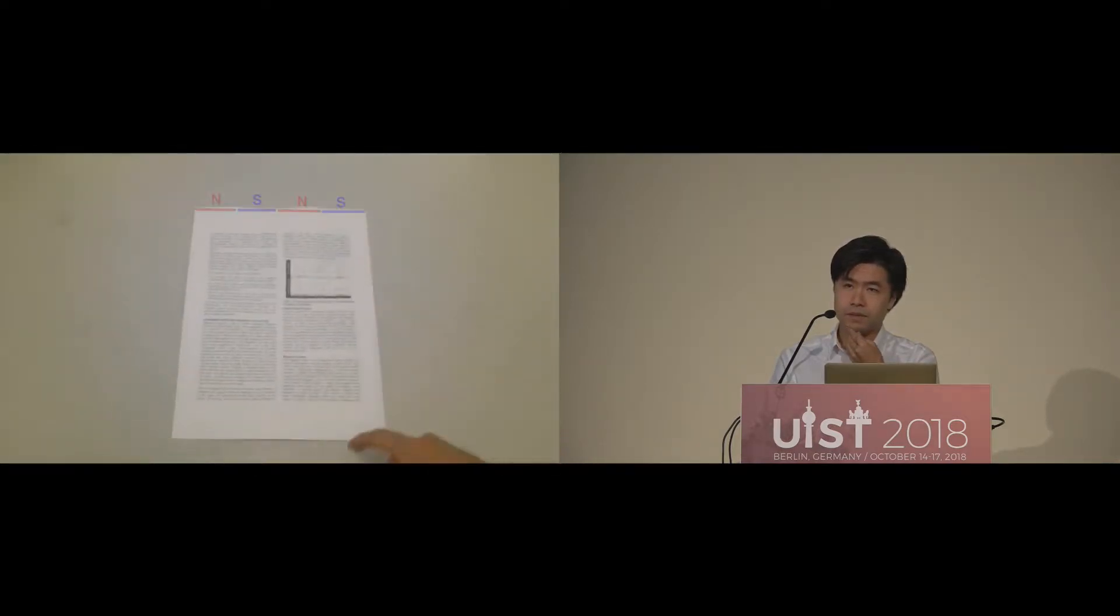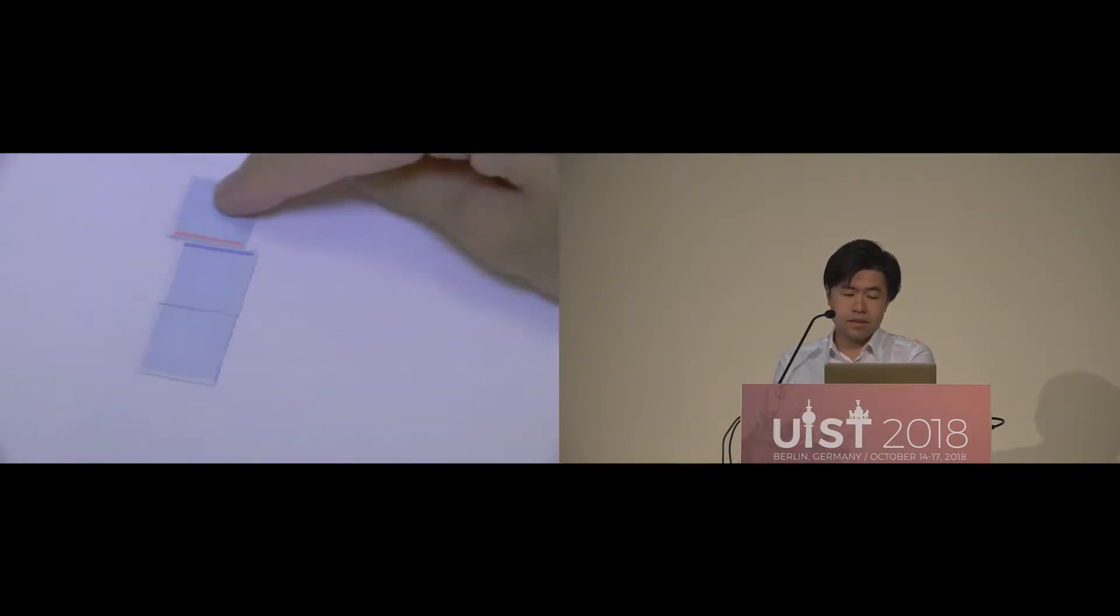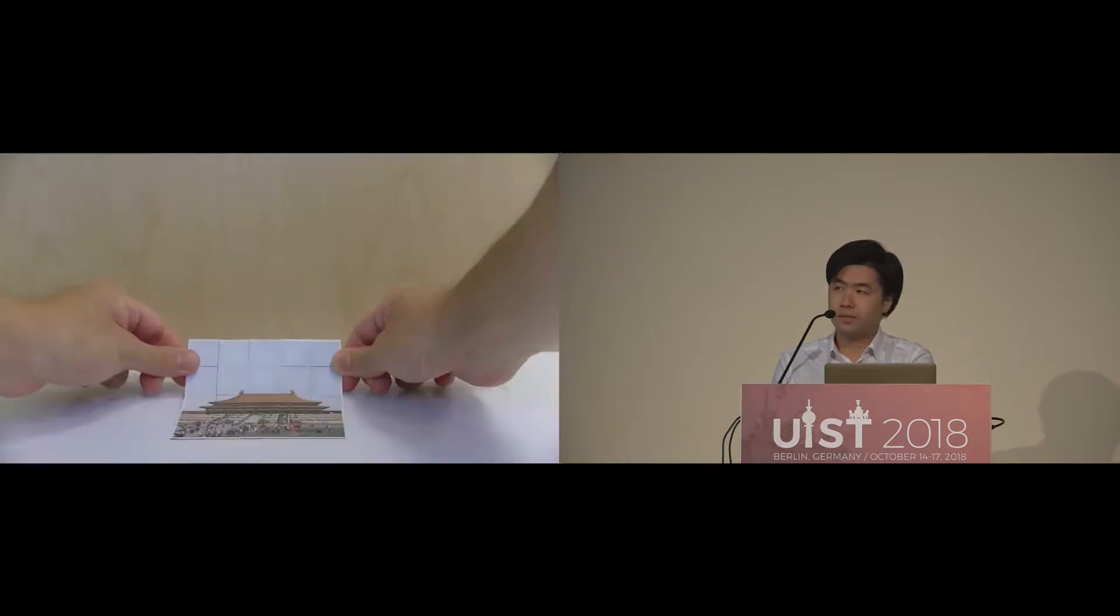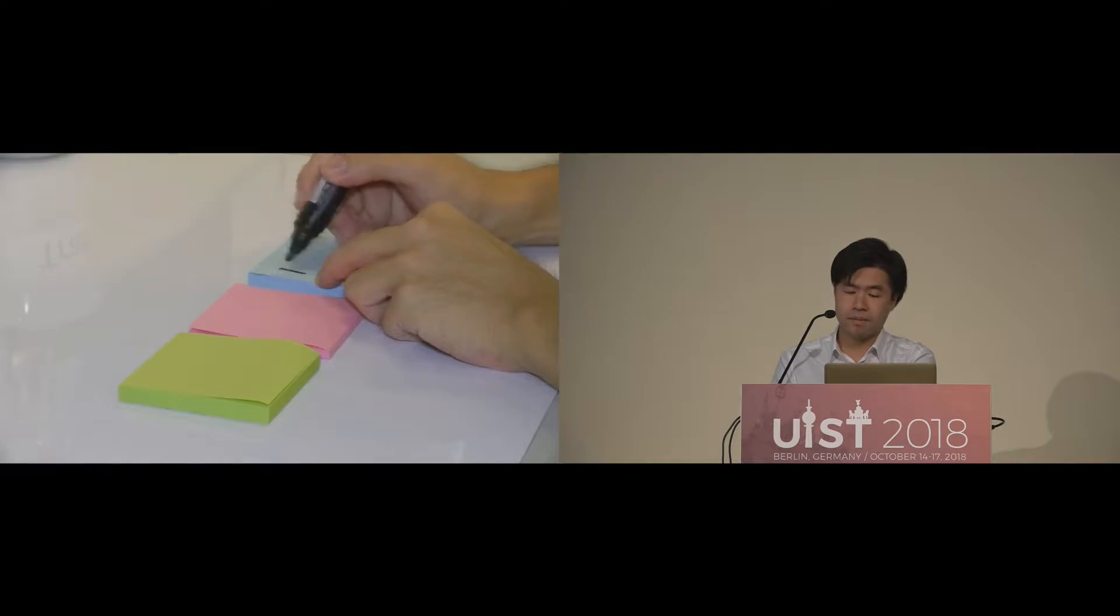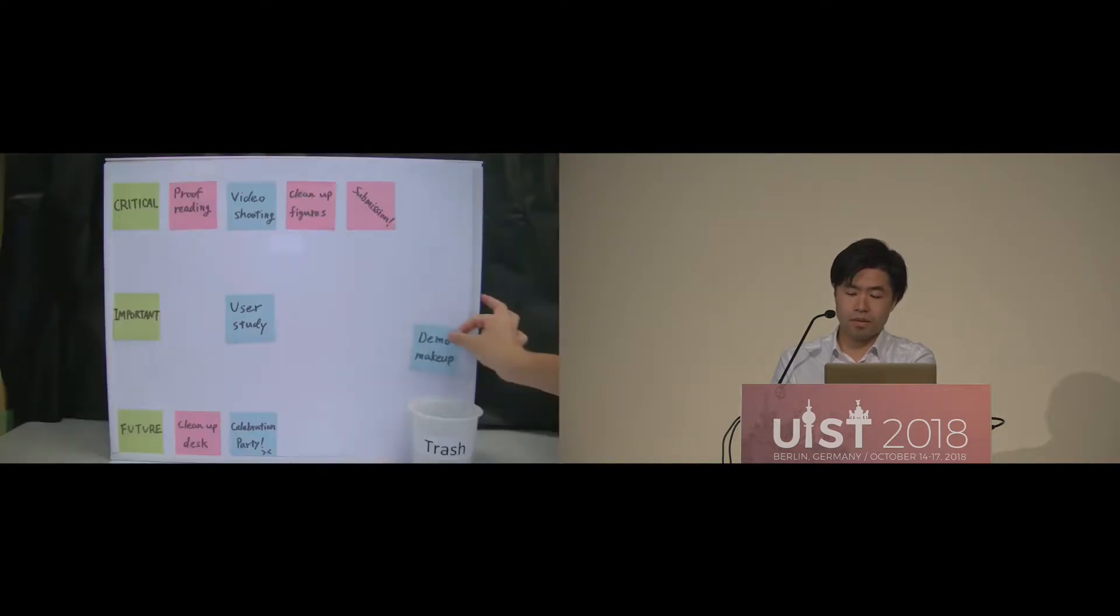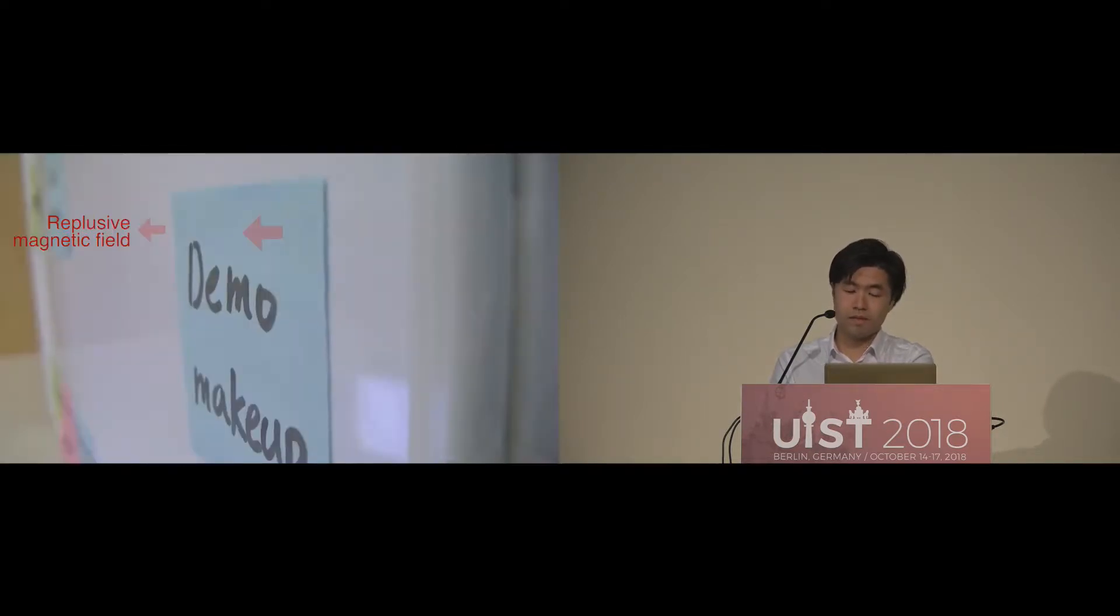Like my previous work named Flux Paper, it looks like normal post-it or paper, but actually it has powerful magnetic layer backside and it works as an animated object or robot in the physical environment.